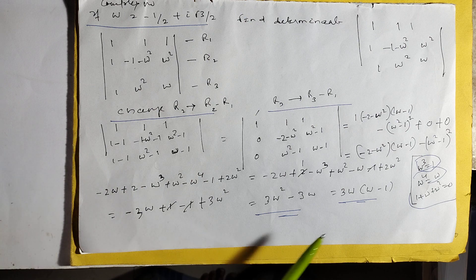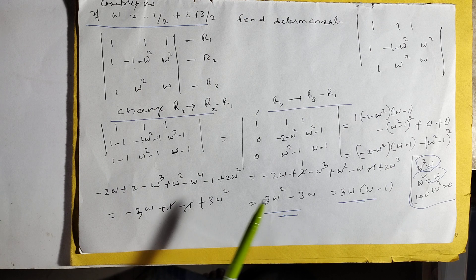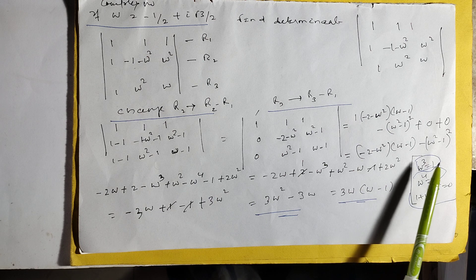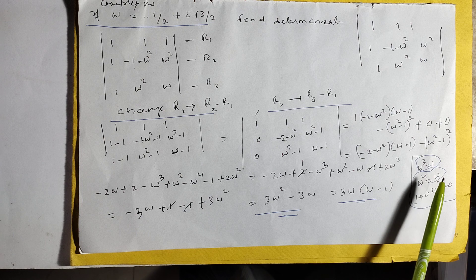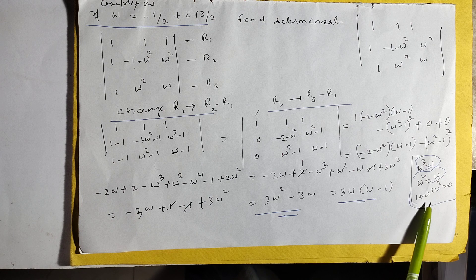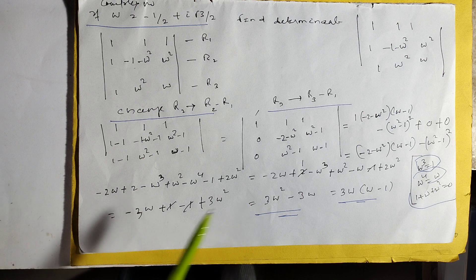Automatically, it will come 3 omega into omega minus 1. Here, one thing is clear. Omega cubed is equal to 1. Omega to the 4 is omega cubed times omega equals 1. 1 plus omega plus omega square is equal to 0. So this is the complex number. If you solve it, you can do it.